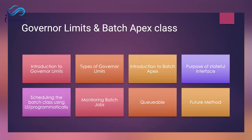When should we implement custom iterables inside a batch class? The first condition is additional processing and filtering. If you need to perform any additional processing or apply custom filter logic to records returned by your query, implementing a batch using Iterable provides the necessary flexibility. With iterables, you have full control over the iteration logic, allowing you to incorporate custom processing, filtering, complex calculations, or specific business rules during the iteration process.